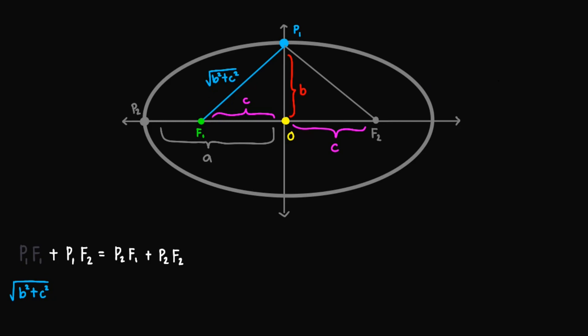Next, we find the value of P1F2, so this one. Similar to the first one, we have here B and C. And again, this is a right angle. So applying Pythagorean theorem again, we'll obtain the square root of B squared plus C squared. And so we now have the value for P1F1 and P1F2.